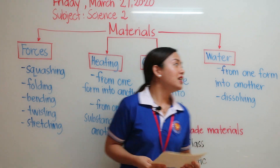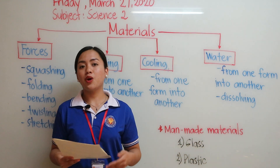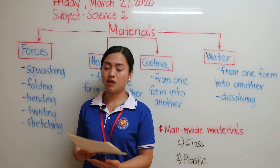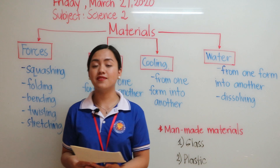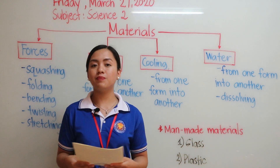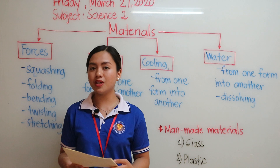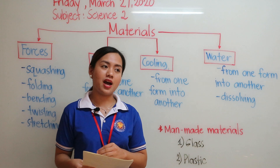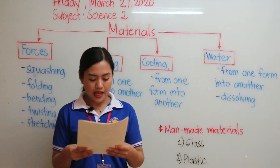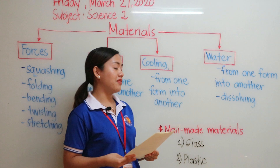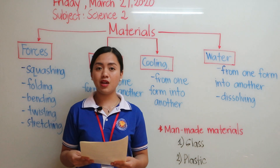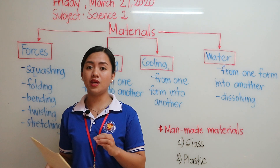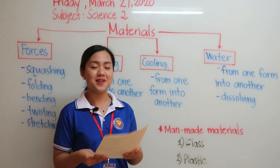Materials can also be changed when mixed with water — from one form into another. For example, sand mixed with water causes the tiny grains to stick together, which is why we can make sandcastles. Also, if we mix water with flour it turns into a dough, which we can squash or twist before we bake.